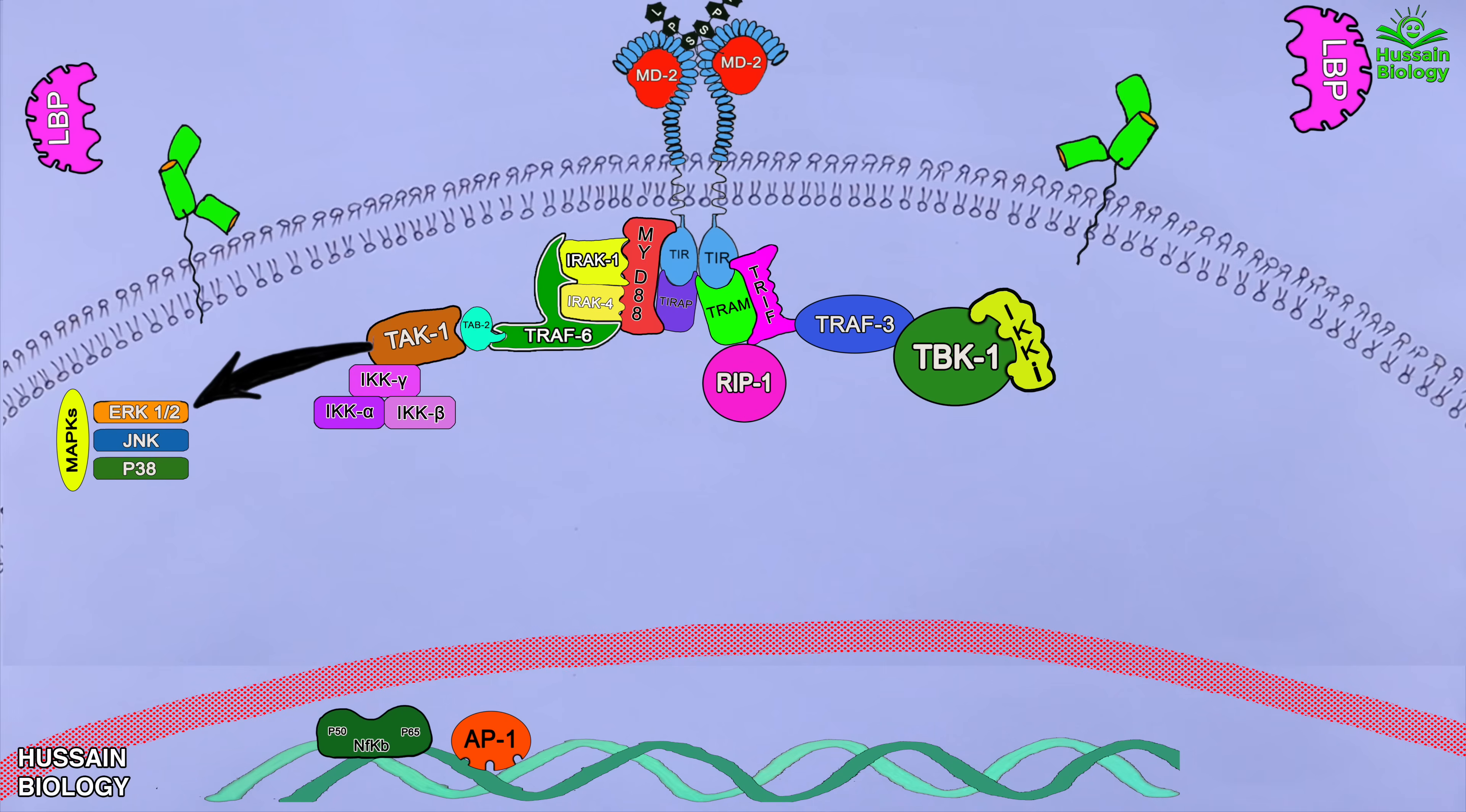And from here TBK1 activates the IRF3 protein complex which is interferon regulatory transcription factor. Upon activation it gets into the nucleus and we get the transcription of type 1 interferons and this concludes our TRIP dependent pathway.